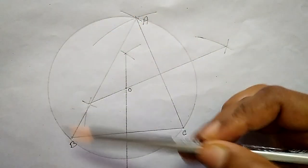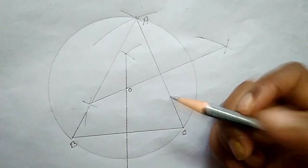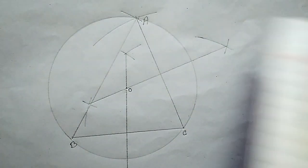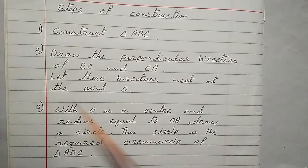This is the required circumcircle of the triangle, and O is the circumcenter. Here are the steps of construction.